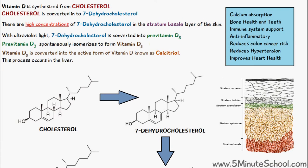There are high concentrations of 7-dehydrocholesterol in the stratum basale layer of the skin, shown here. As we've said, 7-dehydrocholesterol is what is used to make vitamin D. With ultraviolet light from sunlight, this 7-dehydrocholesterol is converted into pre-vitamin D3.